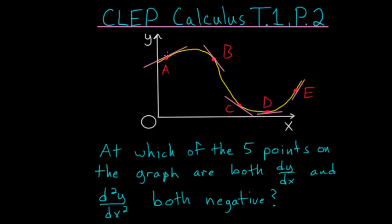Notice at point A, we have a positive slope here. So the derivative is positive. At point B, it's a negative slope. So the derivative is negative. C would be negative. D looks like it's either slightly positive or right around zero. And E would have a positive slope.